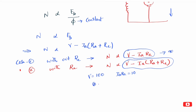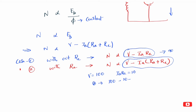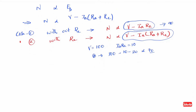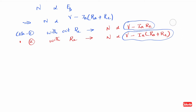In case 2 with Re: 100 minus 10 (Ia·Ra) minus 20 (external resistance voltage drop) = 70. So speed is proportional to 70. Comparing case 1 (speed ∝ 90) and case 2 (speed ∝ 70), speed has decreased. So by adding external resistance, speed decreases proportionally.